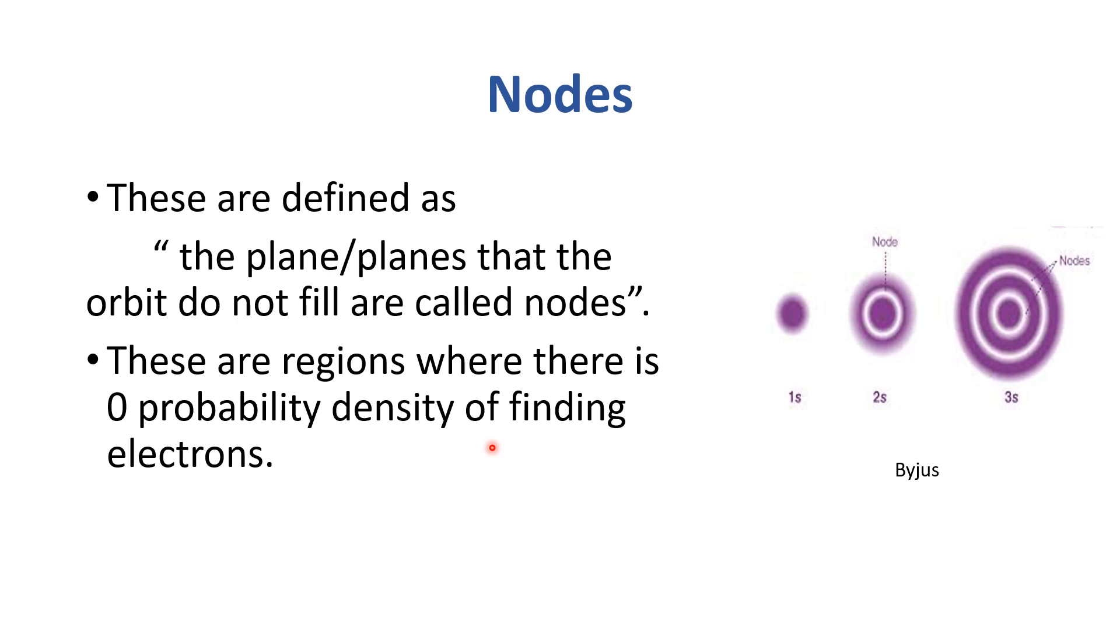Basically, orbital is a space where there is 95% probability of finding electron, while nodes are those regions where there is zero probability of finding electron. So nodes are the points between the orbitals or orbits. Un orbits ke darmiyan jo space hai, jo pe zero electron density hoti hai, usse hum nodes ka naam dete hain.